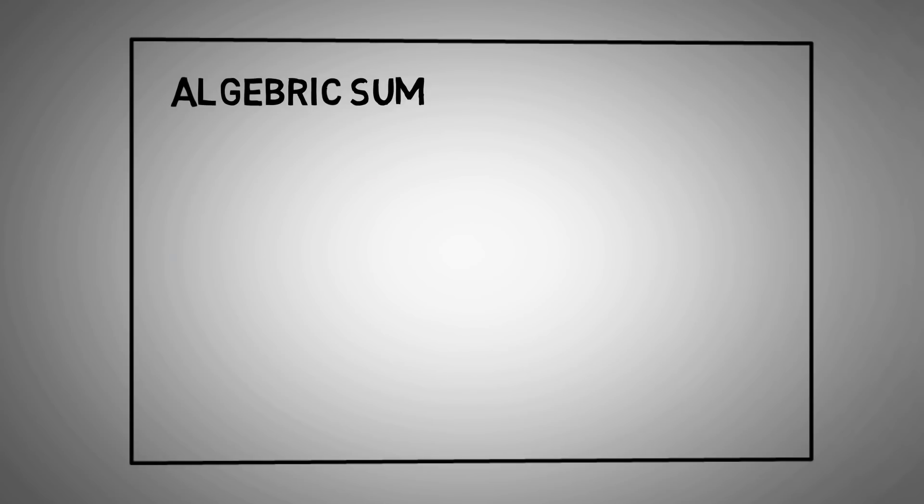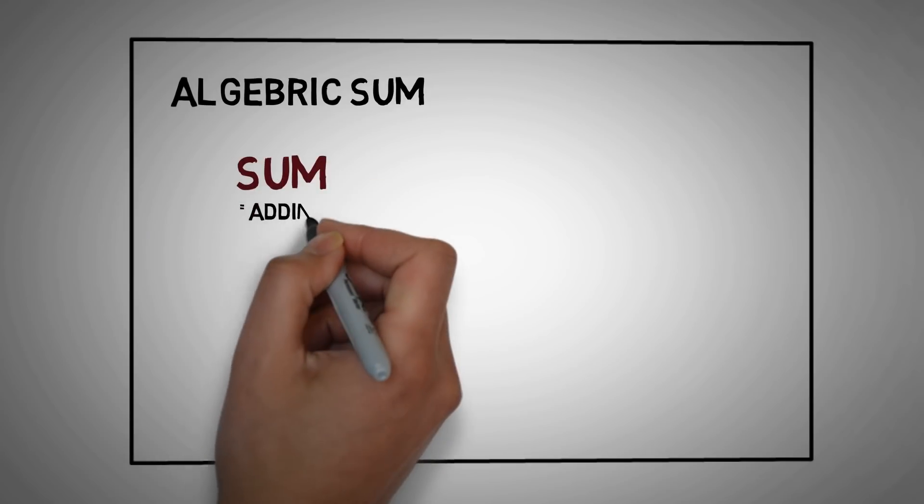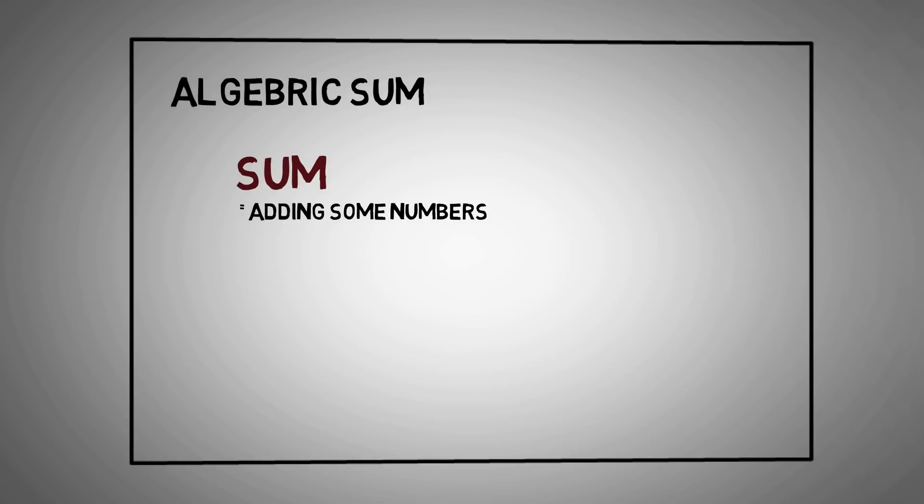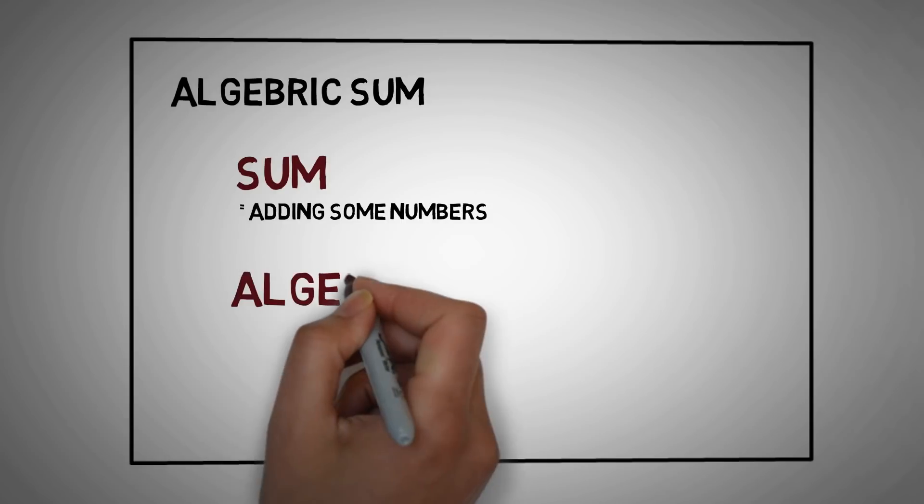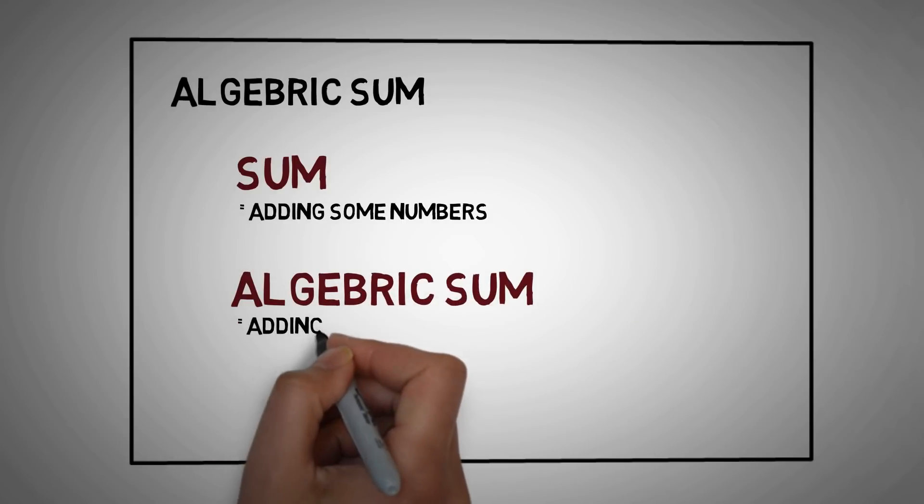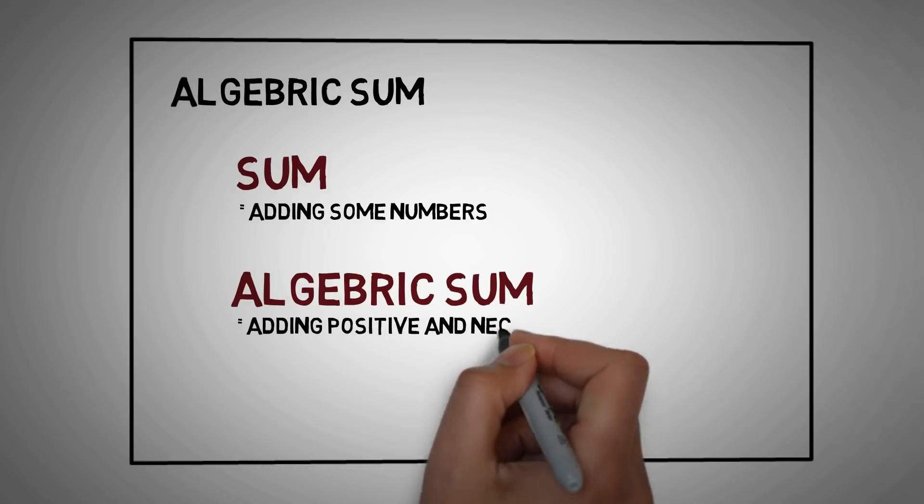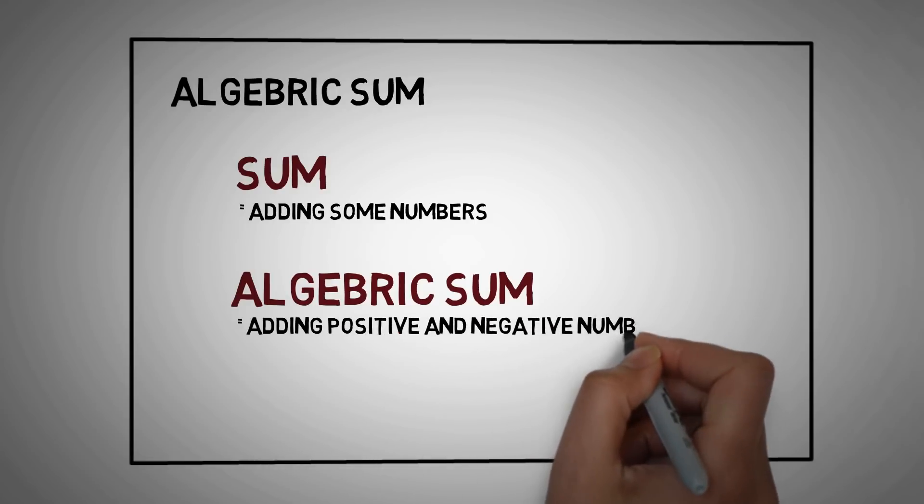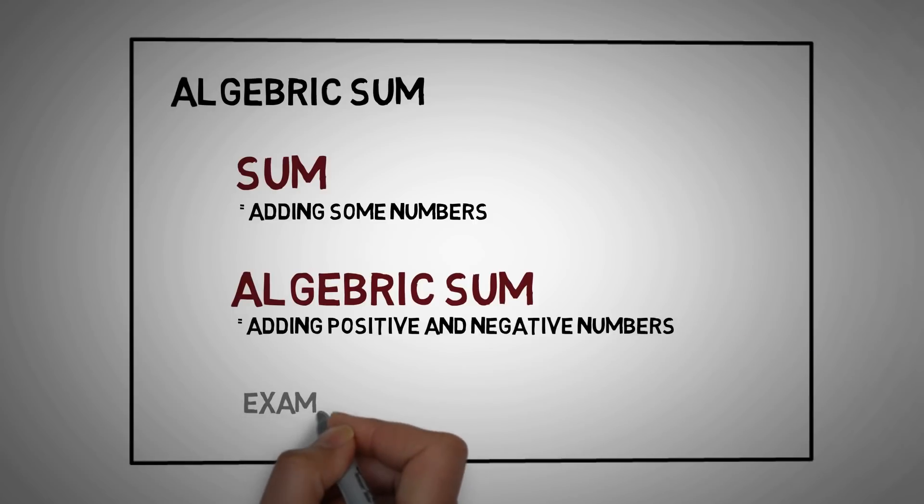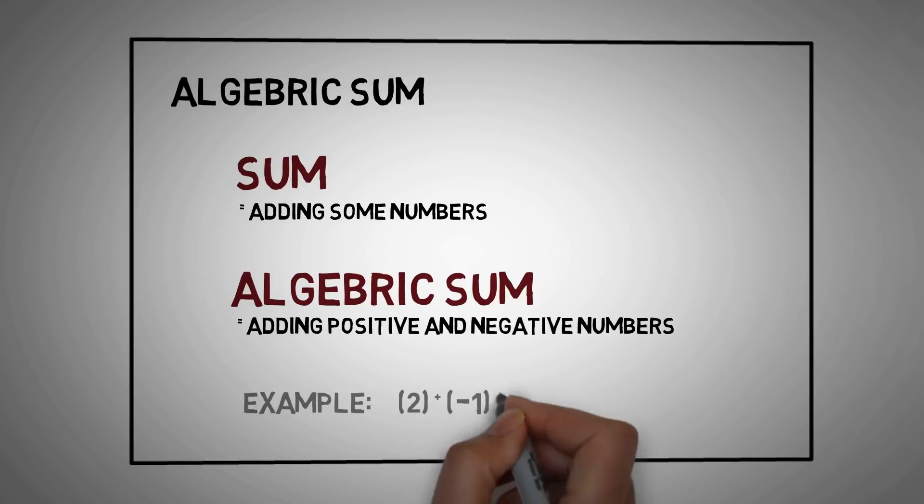We know that sum means adding some numbers, but what is this algebraic sum? When you add some positive numbers and some negative numbers, it is called algebraic sum. For example, 2 plus minus 1 plus 3 equals 4.